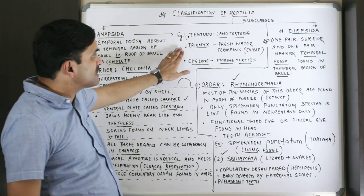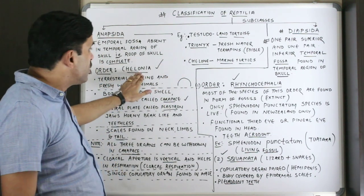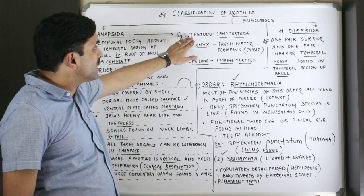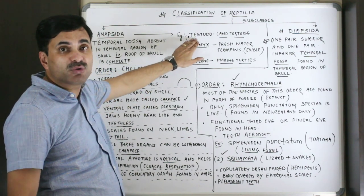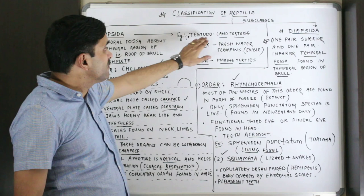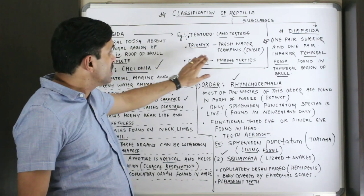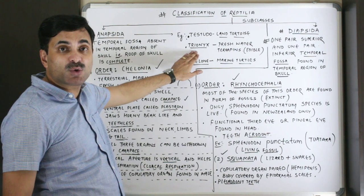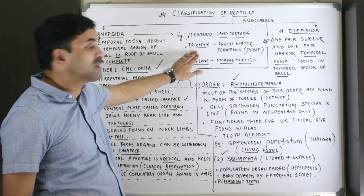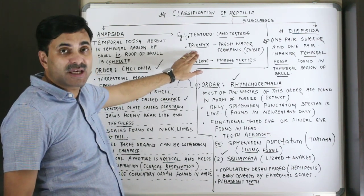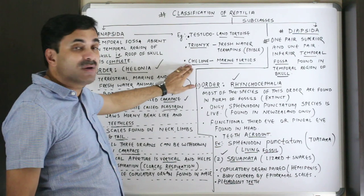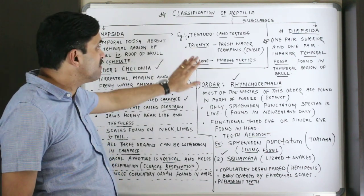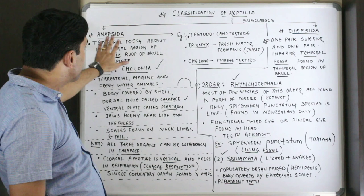Important examples of Order Chelonia: Testudo is the land tortoise; Trionyx are called freshwater terrapins, which are edible; and Chelone is called the marine turtle.